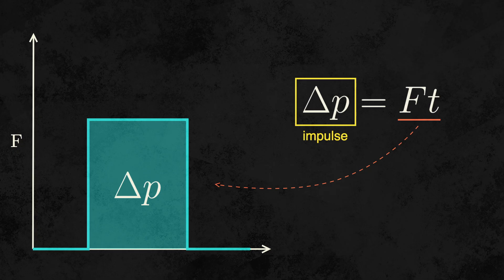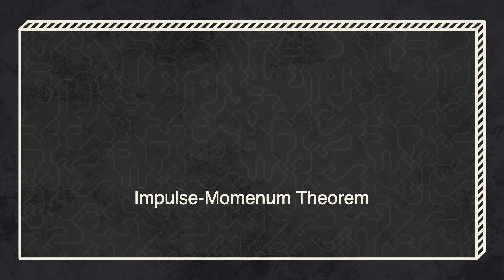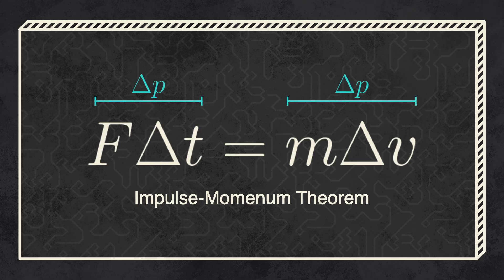So, we see that impulse is simply a change in momentum. This is summarized by the impulse momentum theorem. The change in momentum is equal to the force times the change in time. Thus, momentum and impulse both have the same units.